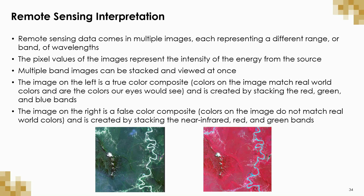You can also stack other bands together that are not in the visible part of the spectrum to get what are called false color composites. These composites take wavelengths humans cannot see and assign them visible color analogs so they can be visualized. For example, a near-infrared, red and green band stack in the red, green and blue channels means that on the computer screen the near infrared band is assigned the color red, the red band is assigned the color green, and the green band is assigned the color blue. This allows us to visualize colors we cannot normally see and therefore view features in the landscape we may otherwise miss.